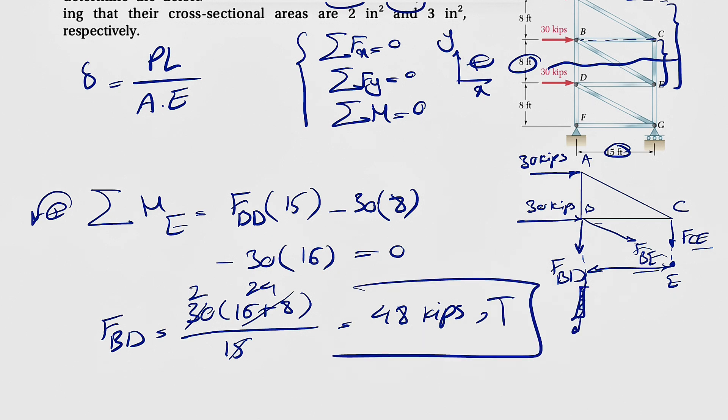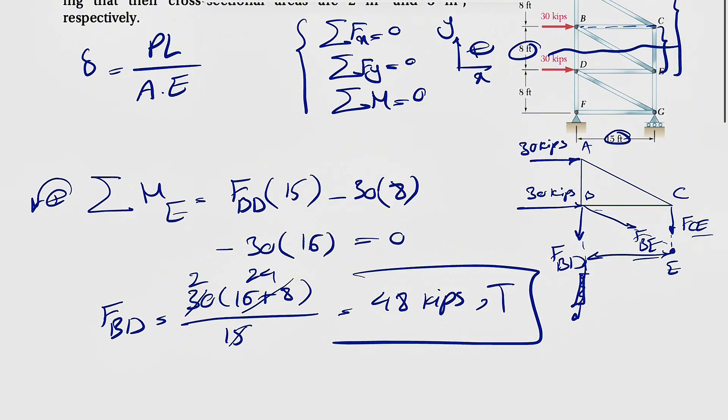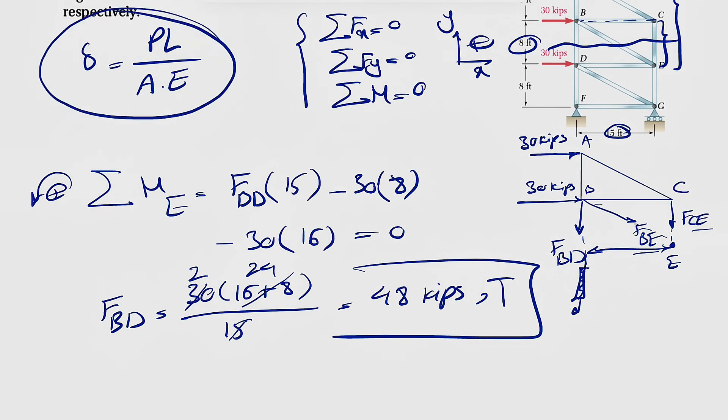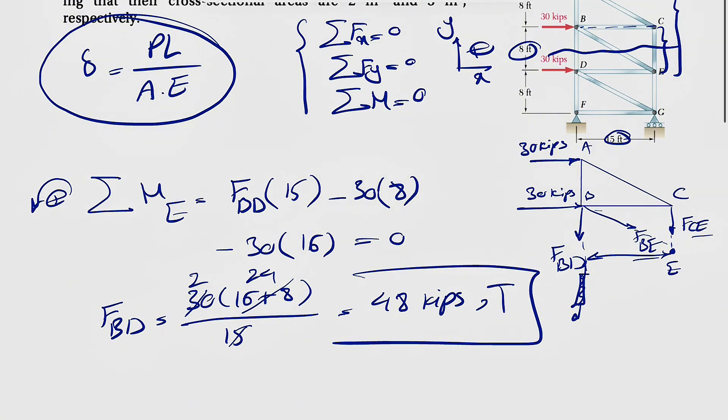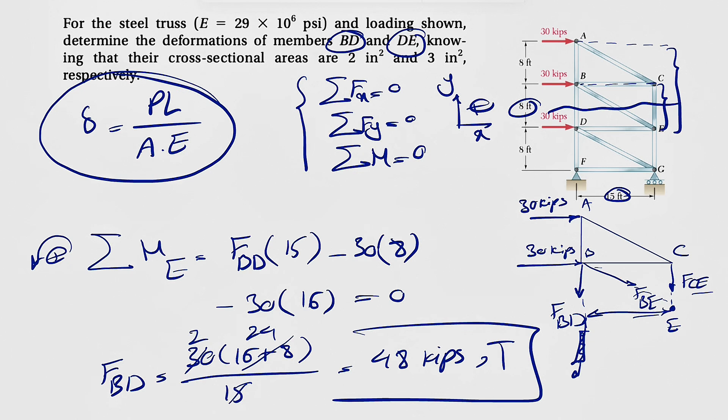We did not get any negative sign. That shows the direction is actually correct, meaning that the member BD, which is somewhere in here, is in tension. So we're going to be expecting a positive elongation for this member. We have the formula that we discussed. I'm just going to find the forces first and finding the deformation is pretty easy. That was the force in member BD. We have to figure out the force in member DE as well.